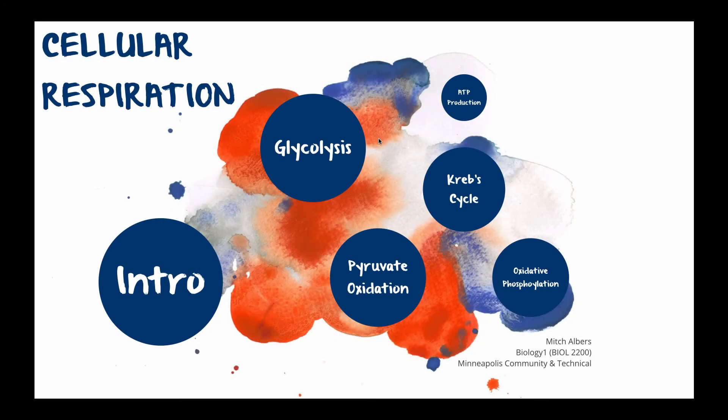Hello everyone, Mitch Albers here. In this biocast, we're going to take a look at the details of what occurs between glycolysis and the Krebs cycle. It's an in-between stage — what we call pyruvic oxidation.